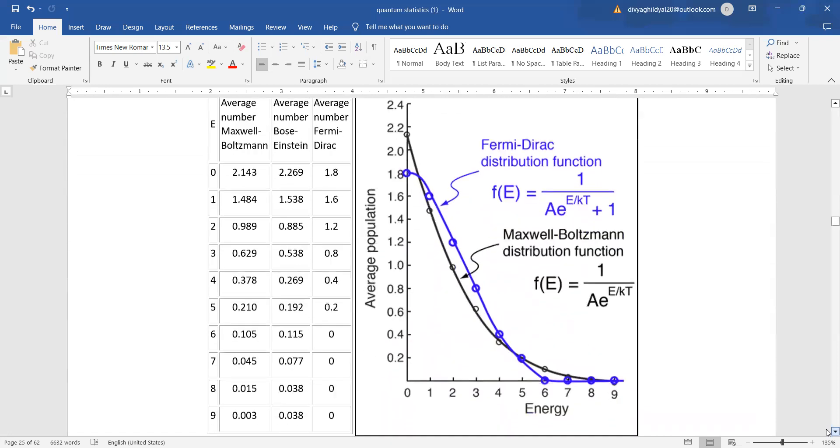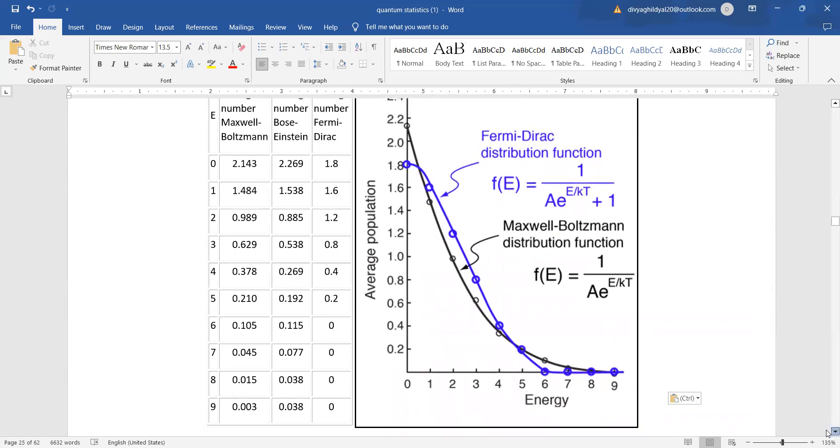Now if we plot a graph, again we see from the formula this was the Maxwell graph. Now here in the Fermi Dirac distribution function, the denominator and numerator, again it is an exponential graph which we obtain.